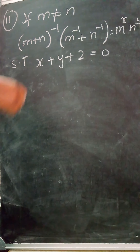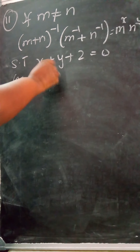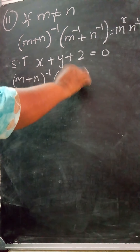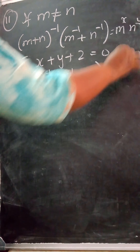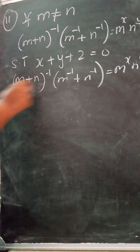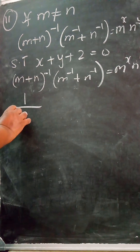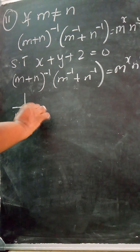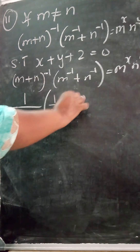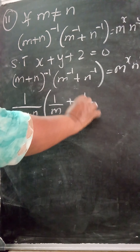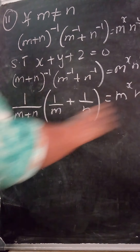So (m+n)^(-1) · (m^(-1) + n^(-1)) = m^x · n^y. I write (m+n)^(-1) as 1/(m+n), and m^(-1) + n^(-1) as 1/m + 1/n. Taking LCM on the bracket gives (n+m)/(mn). Now cross-multiply: the (m+n) terms cancel, leaving 1/(mn) = m^x · n^y.